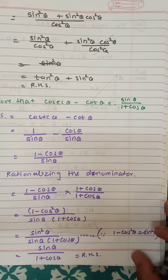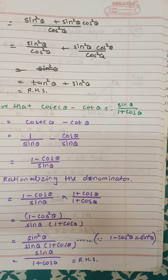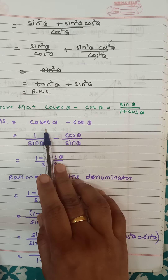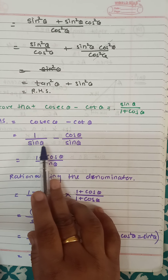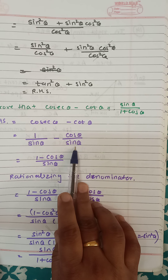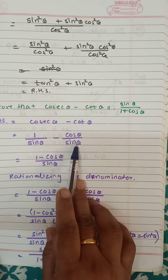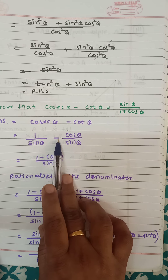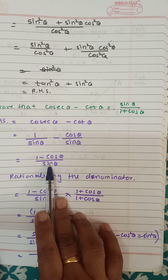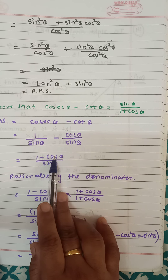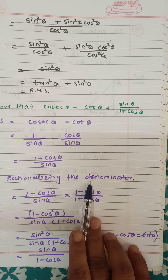Question number 13: prove that cosec θ minus cot θ is equal to sin θ upon (1 plus cos θ). On the left hand side, for cosec and cot, substitute the formula in terms of sin and cos. This is a subtraction of fractions with the same denominator, so copy the denominator once: we get 1 minus cos θ in the numerator.